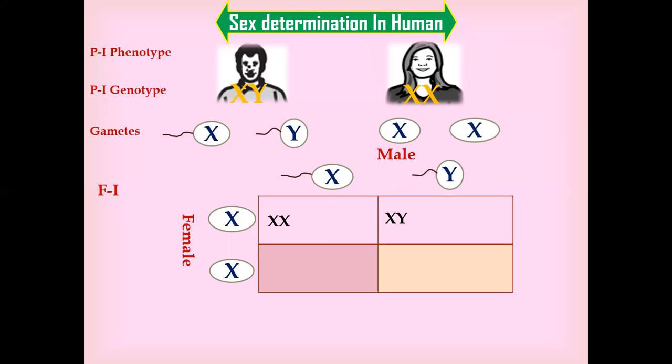The probability is 50-50%. We're going to calculate this 50-50% probability. The XX will determine female, while XY will give information for male.